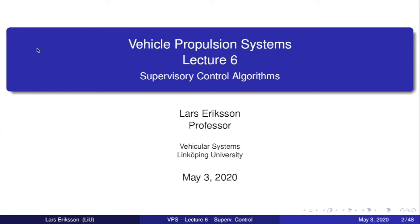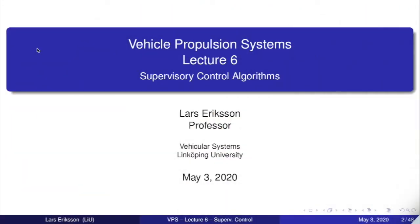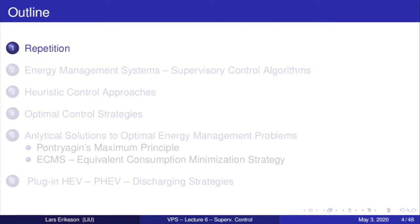Welcome to lecture number six in vehicle propulsion systems, where we will look at supervisory control algorithms and use them for developing control strategies that can be used online in vehicles. We will start with a little bit of repetition, then go into energy management systems and talk about supervisory control algorithms. We'll look at heuristic control approaches, then go into more theoretically founded approaches such as optimal control strategies and analytical solutions to optimal energy management problems. Finally, we'll talk about plug-in hybrid electric vehicles and discharging strategies for them.